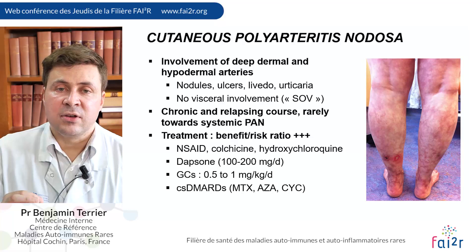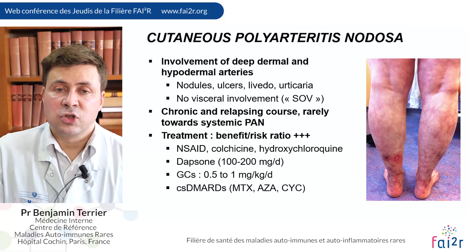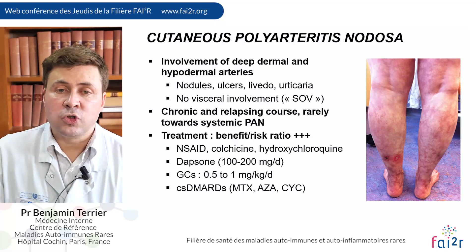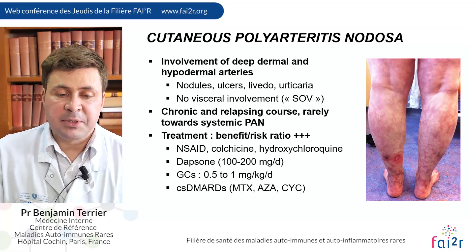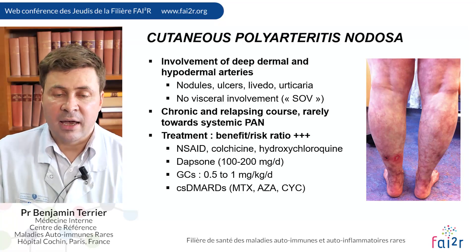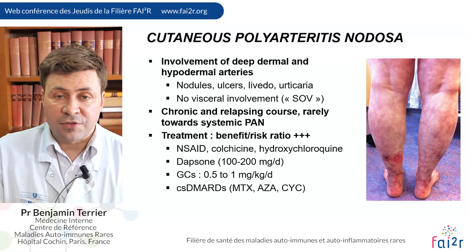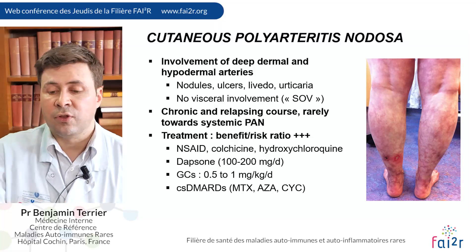The evolution follows a chronic and relapsing course and very rarely evolves toward systemic PAN. Because of this chronic relapsing nature, treatment should be based first on non-aggressive options like colchicine, dapsone, or hydroxychloroquine. Glucocorticoids and immunosuppressive agents can be used if needed, but are not the first-line treatment.